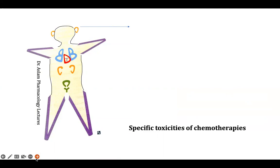The ear is represented by the alphabet C, and the anti-cancer drug starting with C is Cisplatin and Carboplatin. Cisplatin and Carboplatin are responsible for ototoxicity — that is, toxicity to the ears — which may lead to hearing loss. We need to correlate the ear shape C to Cisplatin and Carboplatin.